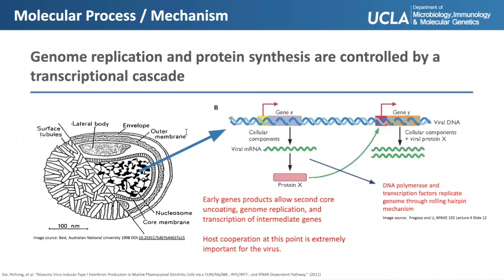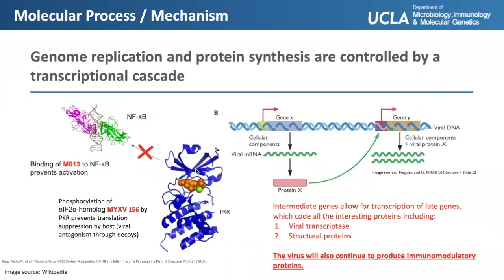Early genes code for DNA polymerase and allow for genome replication to occur through a rolling hairpin mechanism. Complete uncoating also occurs at this stage, exposing the double-stranded DNA to the environment. At this point, it's important for the virus to cooperate with the host, since the host has a higher chance of detecting double-stranded DNA in its cytoplasm. It's been reported that certain factors, such as M062, protect the virus from interferon signaling via the cGAS DNA sensor.